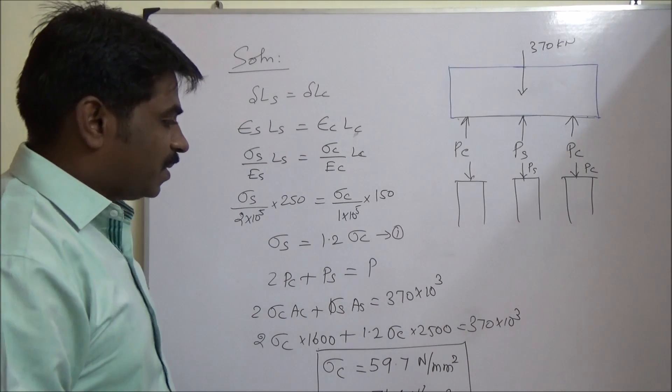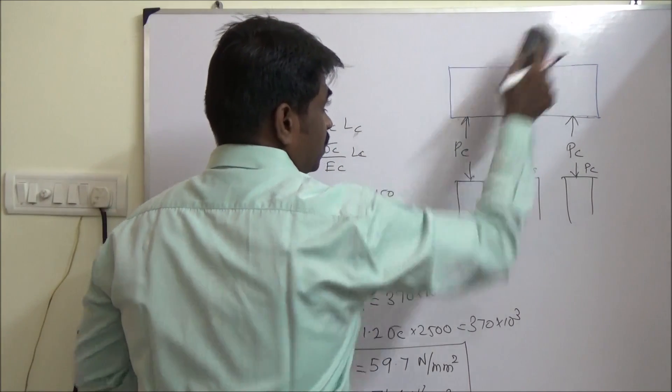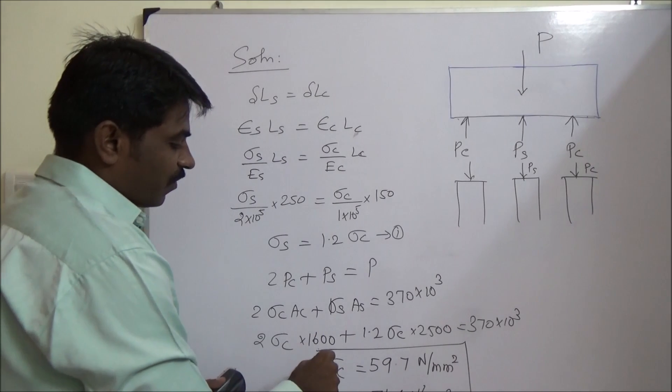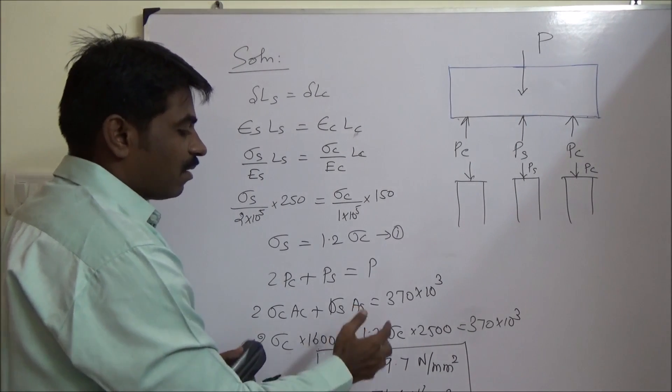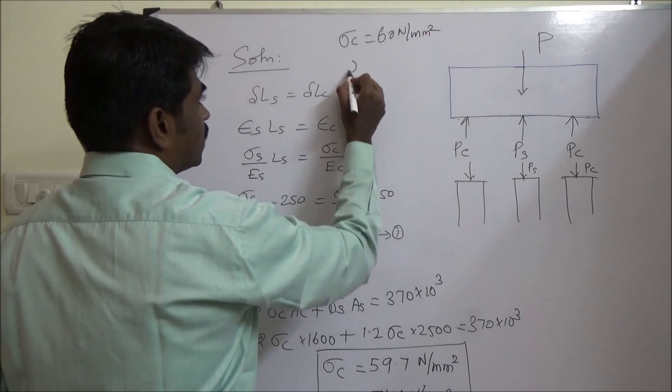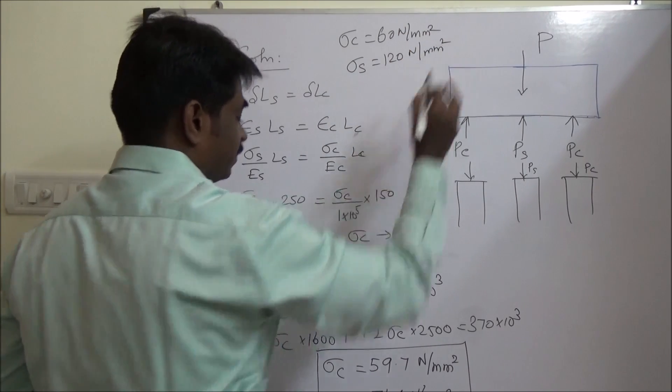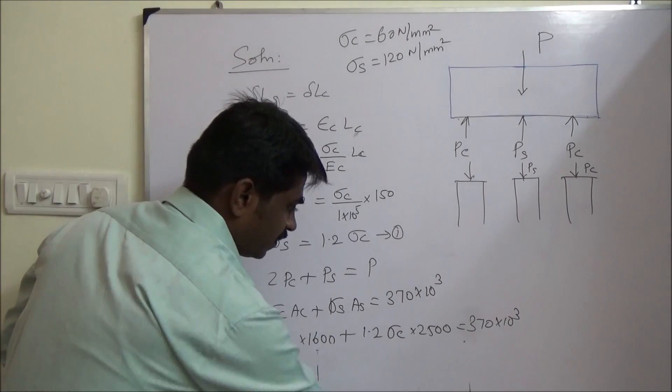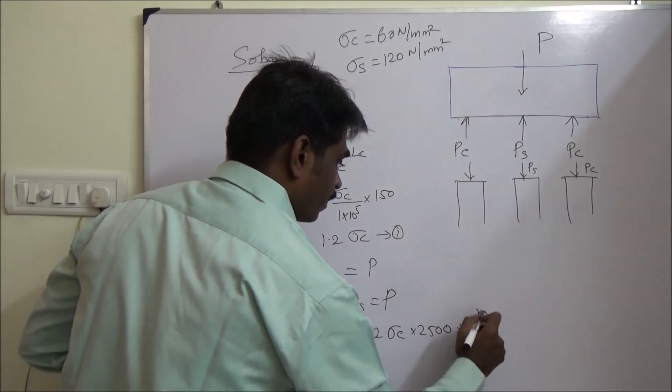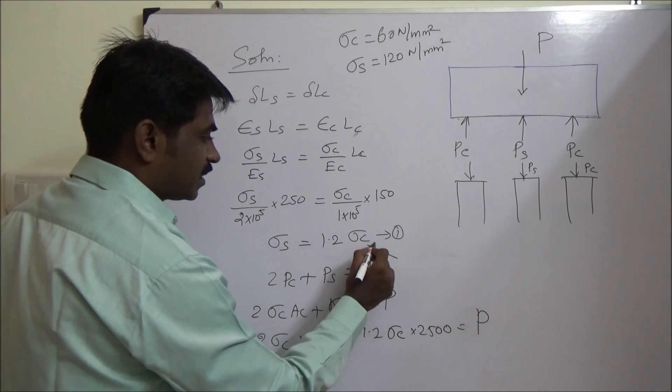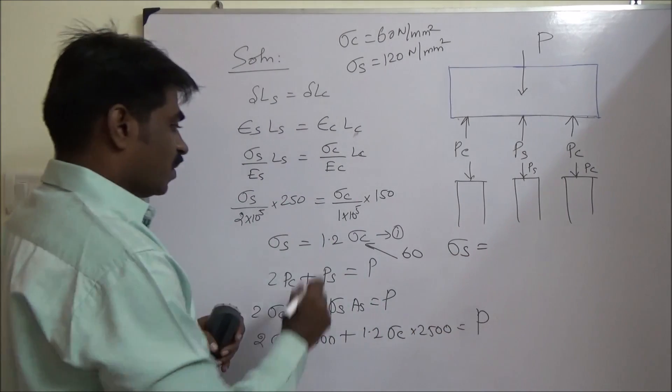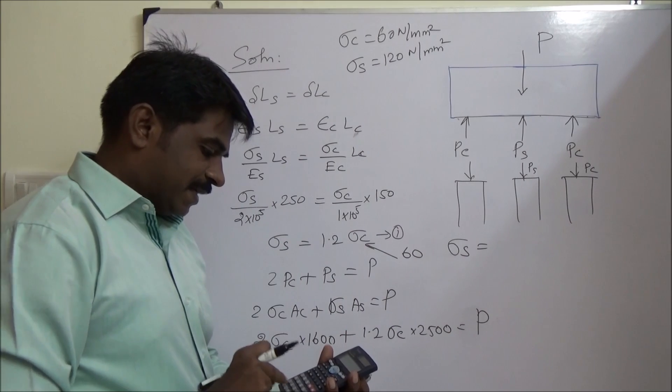Now I want to slightly extend this problem. If the load 370 is not known, and the limiting value of copper and steel are given. For example, sigma C is given as 60 Newton per mm square, sigma S is given as 120 Newton per mm square. So in order to find out the P, if you are substituting 60 and finding sigma S, sigma S is going to be 1.2 into 60 equal to 72.